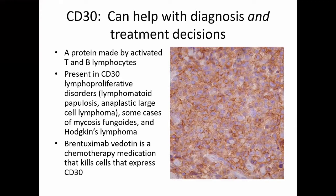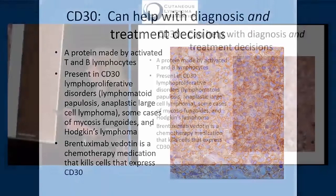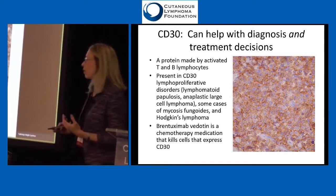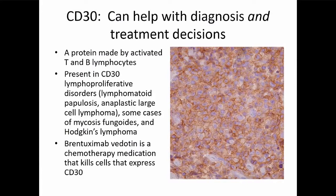There is a protein called CD30 which helps us define different types of lymphomas of the skin. Anaplastic large cell lymphoma and lymphomatoid papulosis, which is a more benign disorder of the lymphocytes, are defined by having this CD30 protein. More recently, we have the drug brentuximab, which works by killing off cells that express CD30. This protein can help us both define things and tell us some of the characteristics of people who may respond better to that kind of treatment.